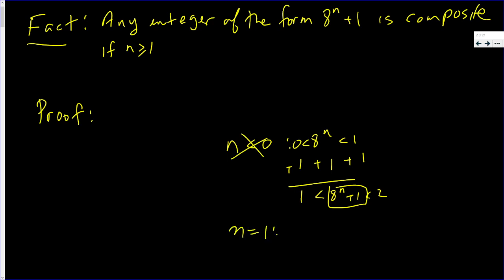If n is 0, you get 8^0 + 1, which is 1 + 1, which is 2, which is an integer but not composite—it's prime. So this is why the theorem doesn't include those cases.